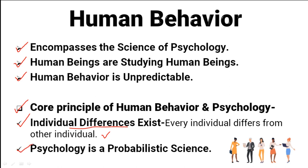We all have that one friend who is always running late. Based on their past behavior, we can assume they will probably be late to our next hangout too, but we cannot say for sure because things can always change. That is basically what is meant by a probabilistic science — we can make predictions about a person's behavior based on their past actions and certain assumptions, but we cannot be certain. The more knowledge you have about human behavior, the better your explanations, predictions, and understanding of why people do what they do.